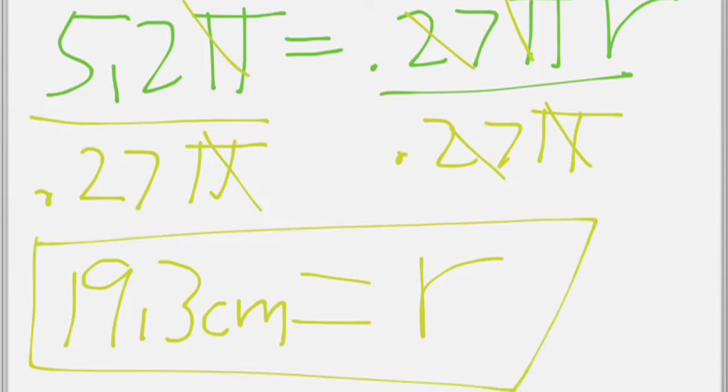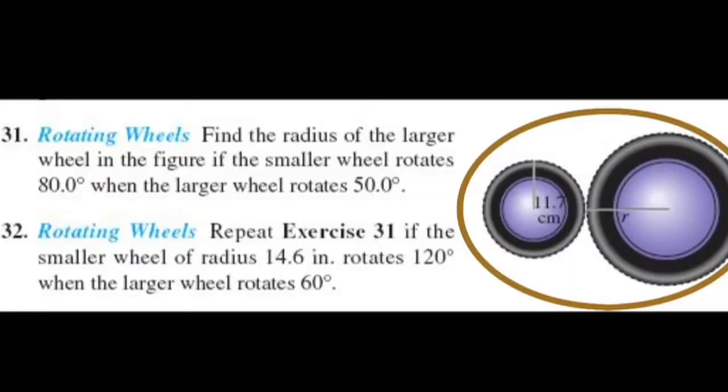So that's our radius. Let's go back and take a look and see if it makes sense. Yeah. That makes sense. If this is 11.7, that one's about 19. Get me all geared up for another one. Bye.